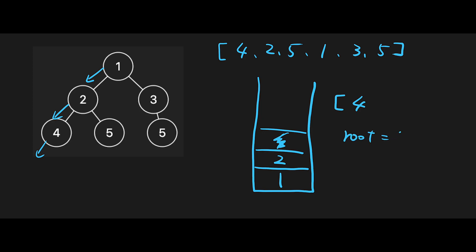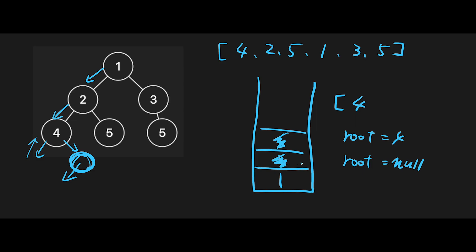Now root is 4. After popping, we check the right child of the current root node. The right side of 4 is null, so root becomes null. We try to push the left side but there's no left side, and current node is also null, so we don't add anything to the stack. Then we do something again — pop the top value, which is 2, and append 2. Now current root is 2, so we check the right side and find 5.